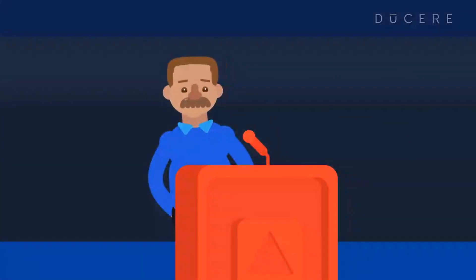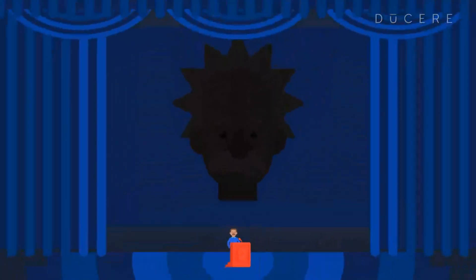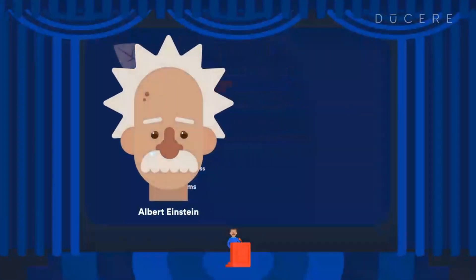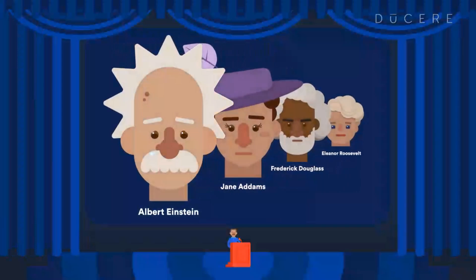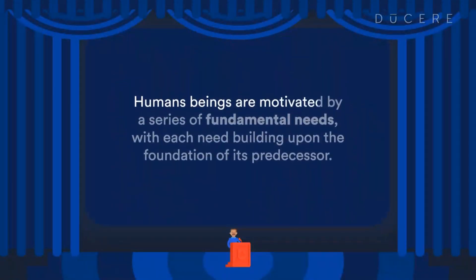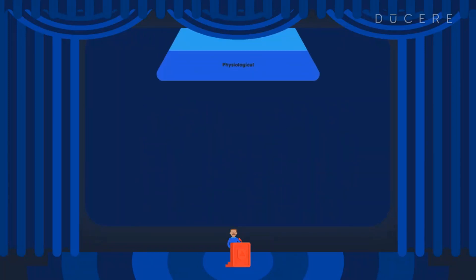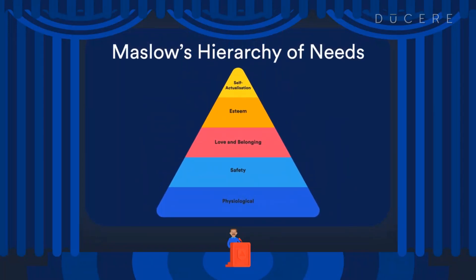In 1943, Abraham Maslow resolved to explain human motivation. After studying a series of exemplary people, he developed a theory that human beings are motivated by a series of fundamental needs, with each need building upon the foundation of its predecessor. This theory was labelled Maslow's hierarchy of needs.